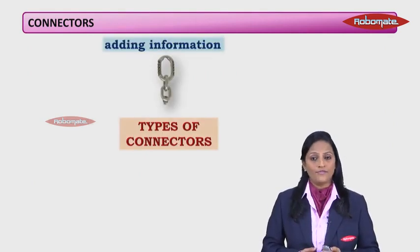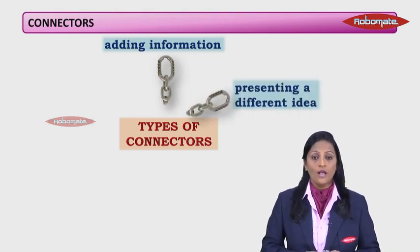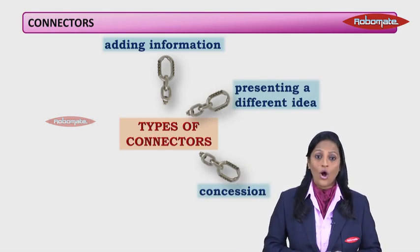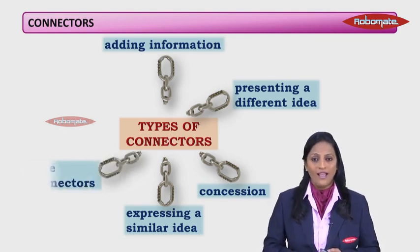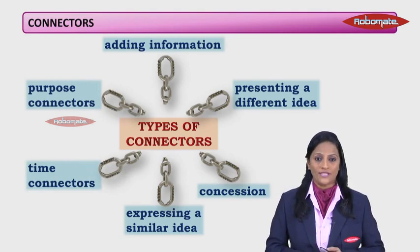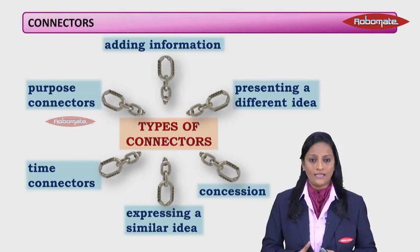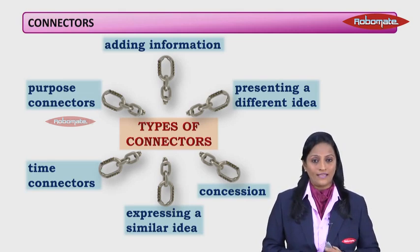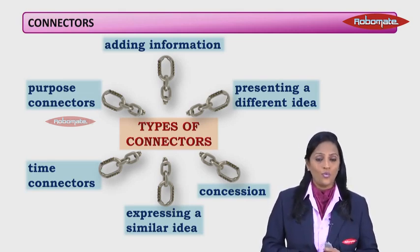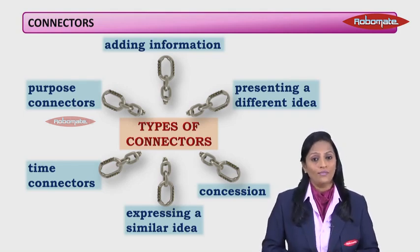So let's move on to learn about the different types of connectors. The first type is adding information. Then we have presenting a different idea, contrast ideas, and concession. We also have expressing a similar idea, time connectors, and purpose connectors. There are many connectors, so we will categorize them. Let's take each one, look at different examples, and see how we use them in sentences.